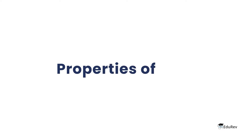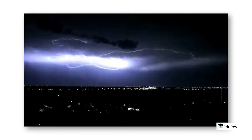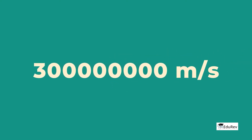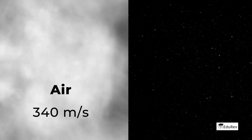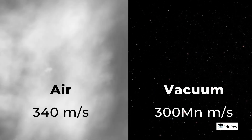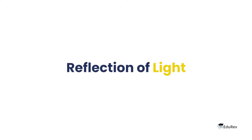Let's look at some important properties of light. Light travels in a straight line with a speed that is faster than sound. Light travels at a speed of 3 × 10⁸ metres per second. The speed of sound through air is about 340 metres per second, and that of light through a vacuum is 300 million metres per second.